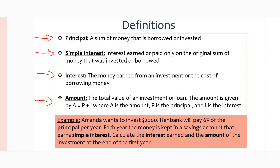The example says: Amanda wants to invest $2,000. Her bank will pay 6% of principal per year, and the money is kept in a savings account that earns simple interest. Calculate the interest earned and the amount of the investment at the end of the first year. So $2,000 is our principal, and 6% is our interest rate.